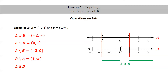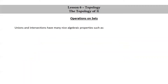And the symmetric difference of A and B is just the combination of the previous two differences. So that's the union of the half-open interval negative 2 to 0 and the infinite open interval 1 to infinity.